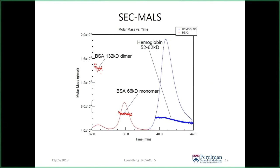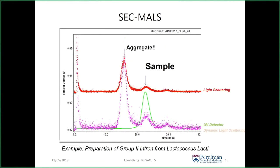Here's an experience I had with a Group II intron. By UV you always see a nice single peak — but what we never saw unless we ran SEC-MALS was a massive amount of aggregation accompanying that sample. We learned from this experiment that we had to spin-filter or pre-size the particle before doing our scattering experiment. Like cholesterol, you can't see it, it's there, it's killing you. Sizing is a very important step in preparing your sample for light scattering analysis.